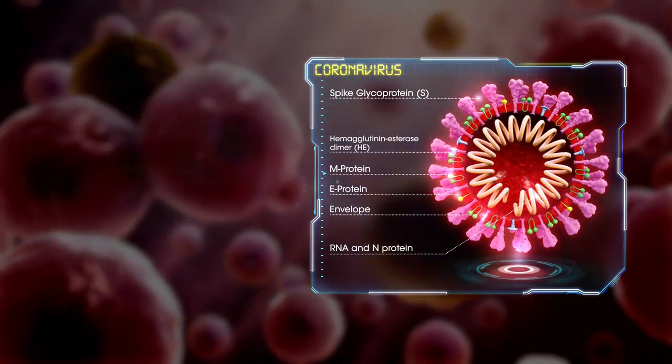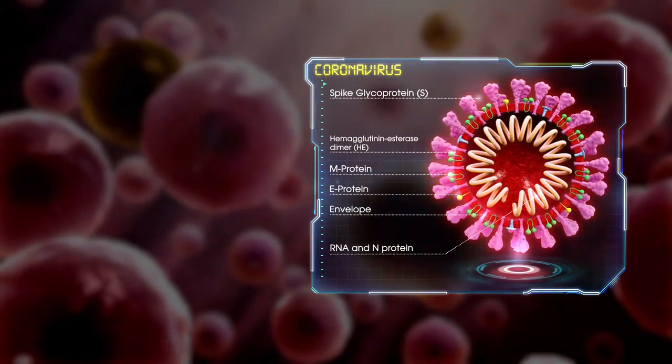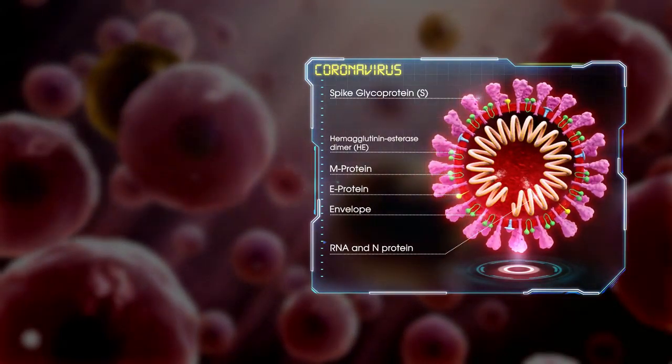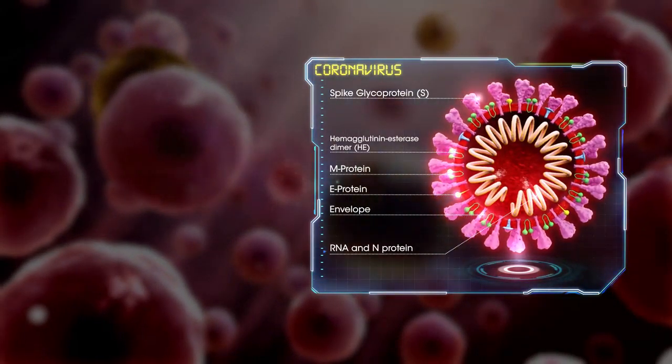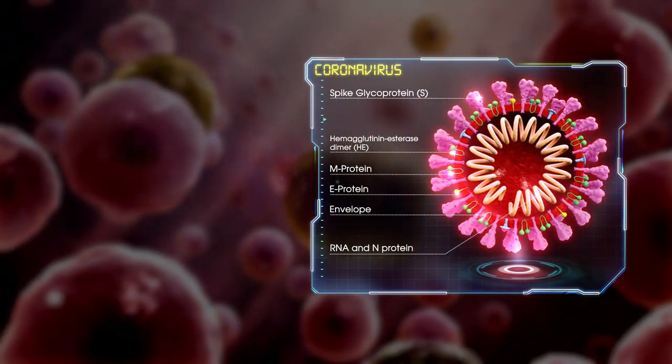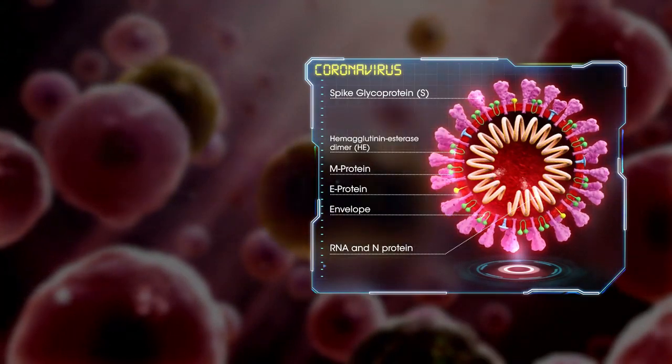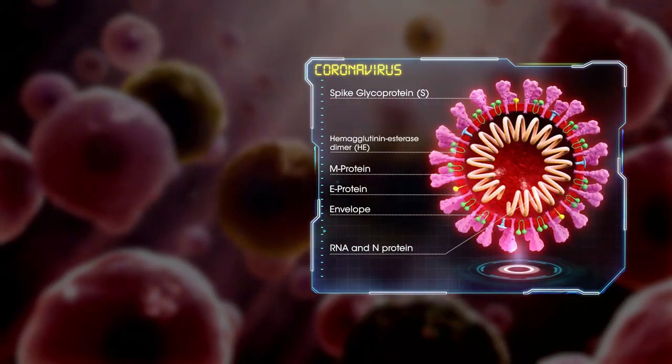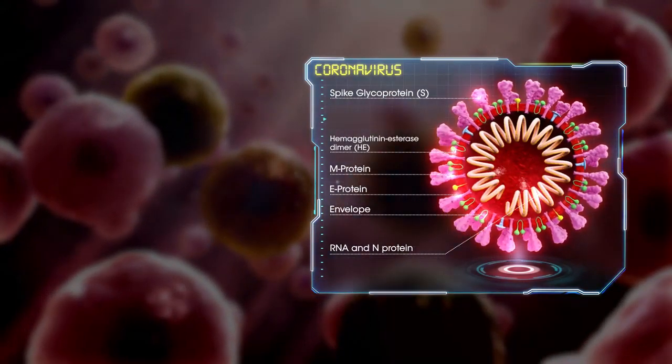A protein encapsulates the genetic material, known as the viral envelope. On the surface of the virion are S and HE proteins.